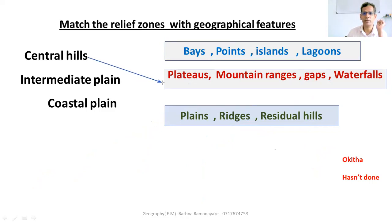Central Hills has plateaus, mountain ranges, gaps, and waterfalls. In the Intermediate Plain you can see plains, ridges, and residual hills. In the Coastal Plain you can see bays, points, lagoons, and islands.